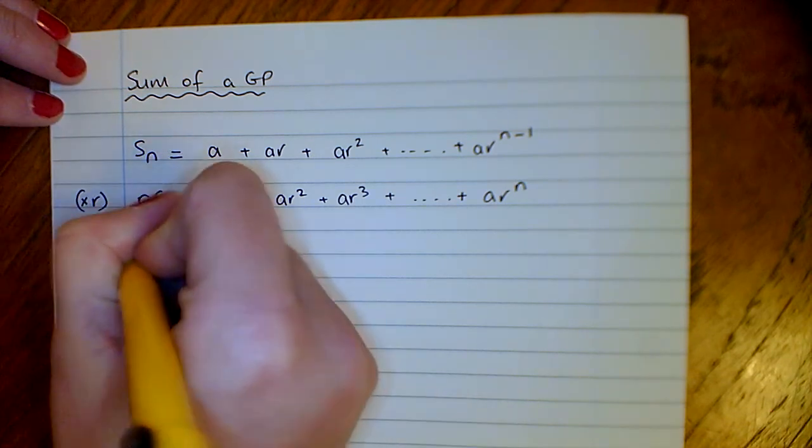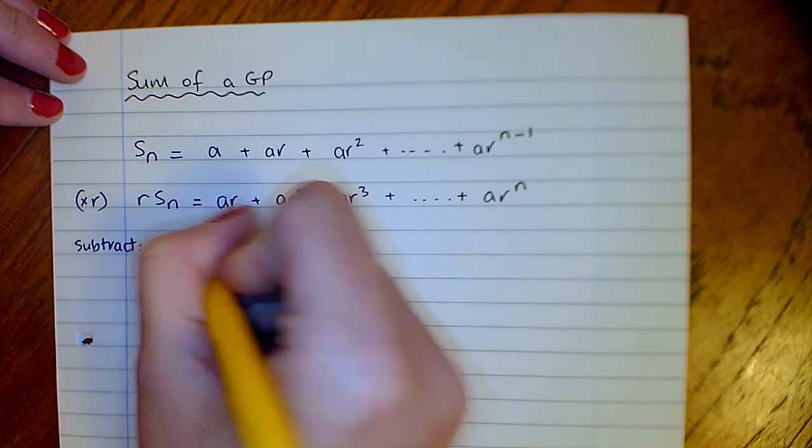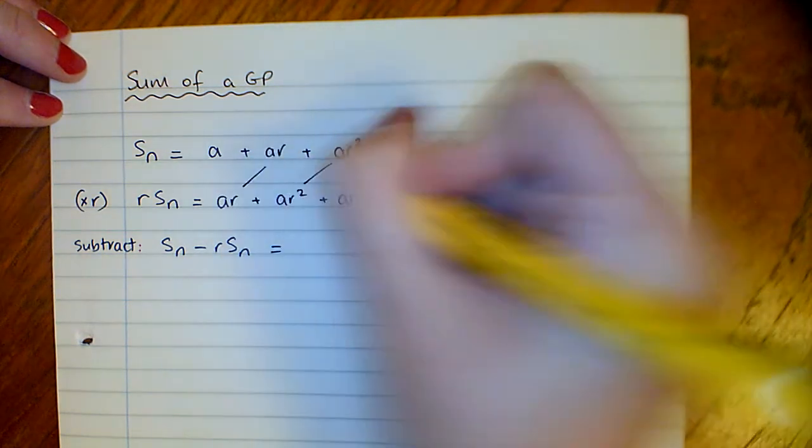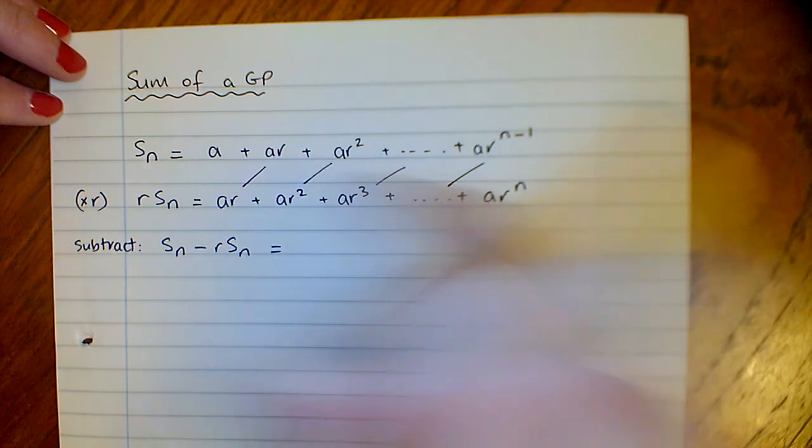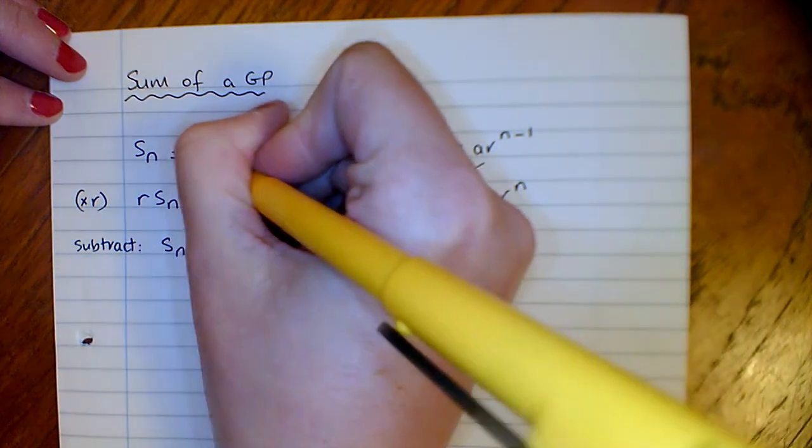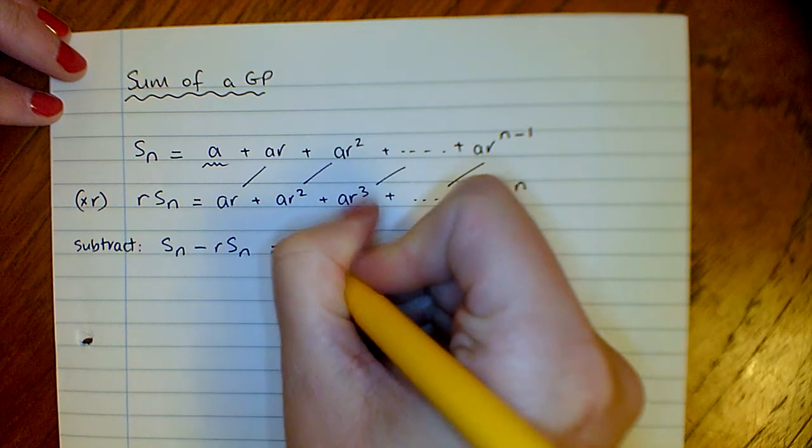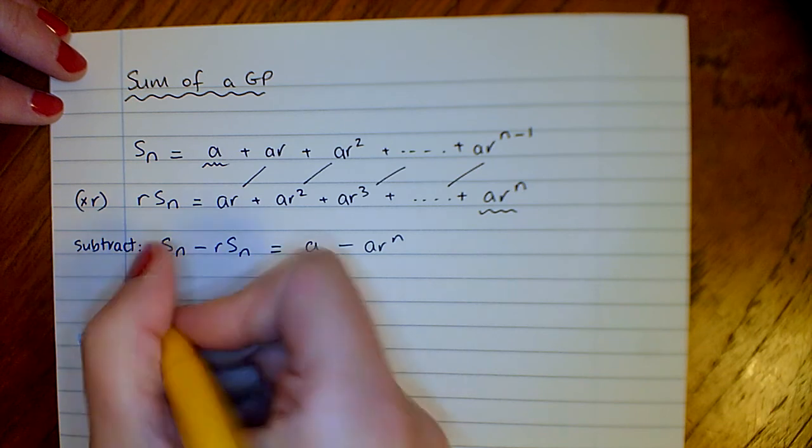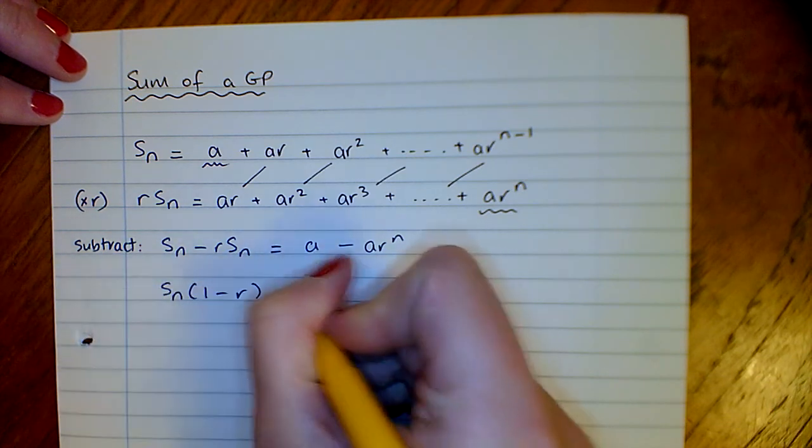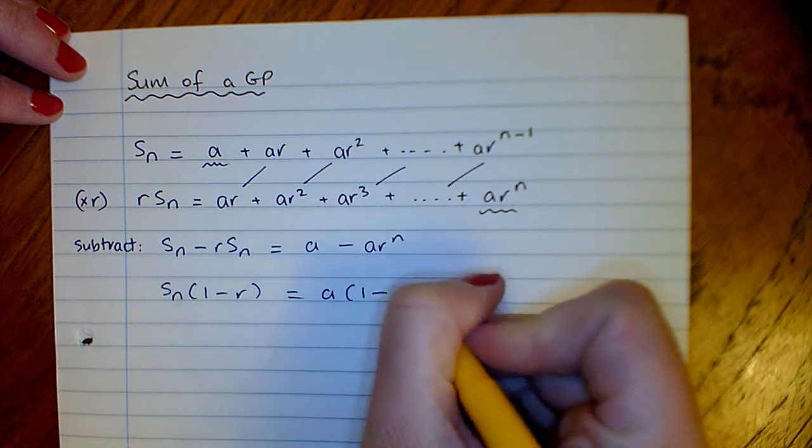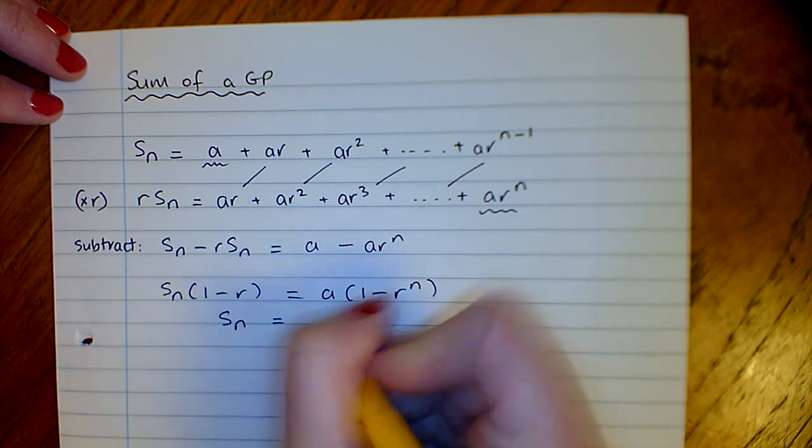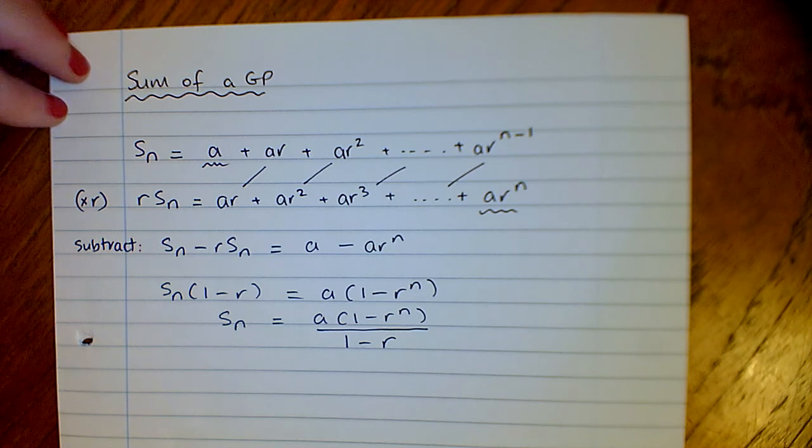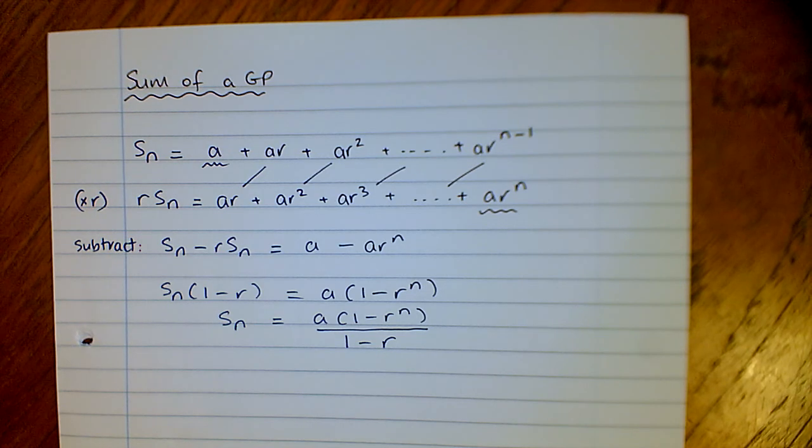We're then going to subtract. On the left hand side of S, the sum, take away R times the sum. You'll notice when we subtract, all the terms will disappear apart from our first term up here and our last term here. So we leave that as A minus AR to the power of n. Take SN out, take A out over here, and then divide through by 1 minus R, and that is the sum of a GP.